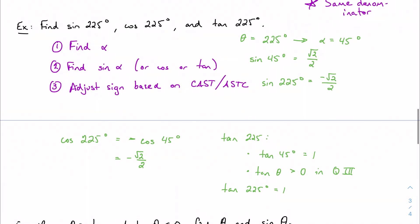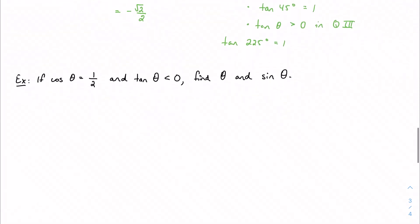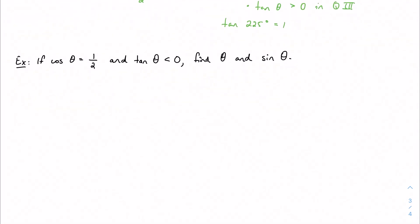So that's the process: find the reference angle alpha, find the trig value at that reference angle, find the quadrant and adjust your sign. Let's think in reverse with one more problem. Cosine is 1/2 and tangent is negative — I want to find the angle and sine of theta. Cosine is positive and tangent is negative, so using All Students Take Calculus, the only place where cosine is positive and tangent is negative is quadrant 4.